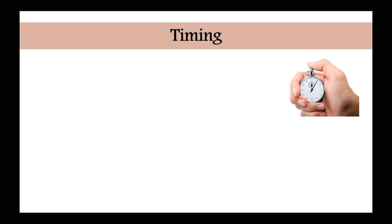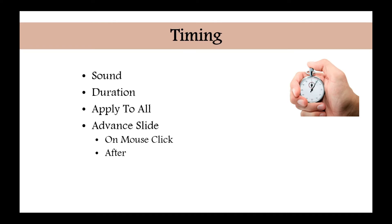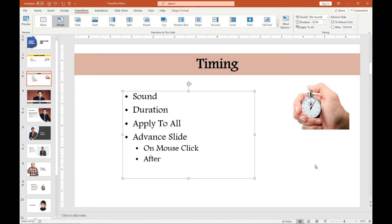The timing is the group or sub-functionality of transitioning from one slide to another. It offers some additional functionality like sound, duration, apply to all, and advanced slide. Let me take you quickly to the timing menu, which is part of the transition menu. If you are on the transition tab, the first thing we have already covered is transition to the slide and the preview part.